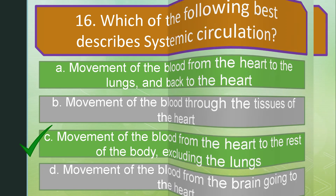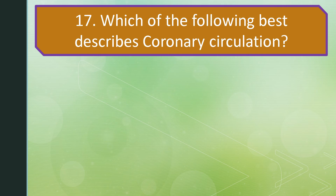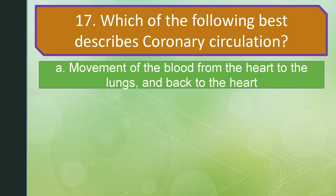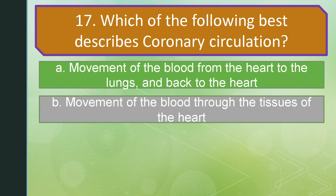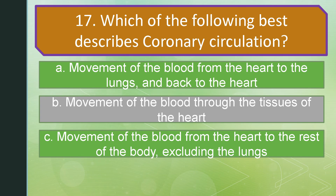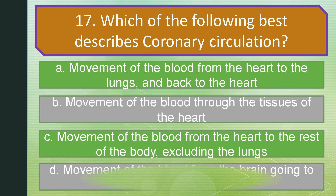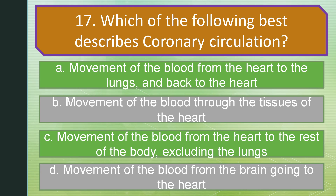Question number 17. Which of the following best describes coronary circulation? Is it A: Movement of blood from the heart to the lungs and back to the heart. Letter B: Movement of blood through the tissues of the heart. Letter C: Movement of blood from the heart to the rest of the body excluding the lungs. Or letter D: Movement of blood from the brain going to the heart. The correct answer is letter B: Movement of blood through the tissues of the heart.